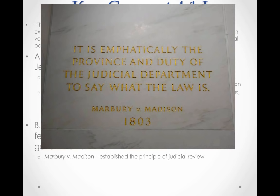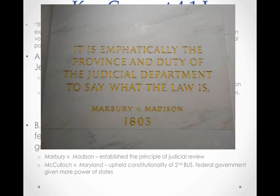Both parties developed for two main reasons: Hamilton's financial plan and the French Revolution. The Supreme Court also strengthened the power of the federal government during this time, often at the expense of state government. Key court cases include Marbury v. Madison (1803), which established the principle of judicial review — the ability of the Supreme Court to declare laws unconstitutional. Fletcher v. Peck extended this to state laws. McCulloch v. Maryland upheld the constitutionality of the Second Bank of the United States, meaning states could not tax a federal agency.